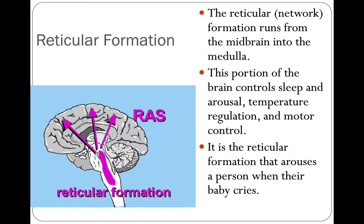The reticular formation runs from the midbrain to the medulla — reticular means network. This portion of the brain controls sleep and arousal, temperature regulation, and motor control. It is the reticular formation that arouses a person when their baby cries, and it's also the reticular formation that can cause an individual to go into a coma. If the area around the reticular formation swells up, it puts pressure on this area and the person will not be able to wake up. They'll also have difficulty maintaining their temperature, which is why people in a coma are kept in a warm room or covered with blankets.